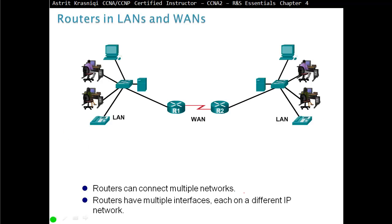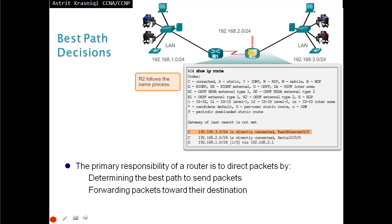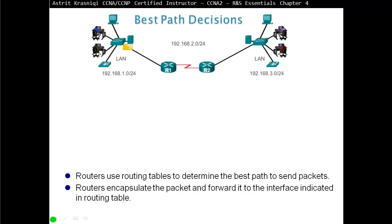Routers in LAN and wide-area networks can connect multiple networks together. Routers have multiple interfaces, each on a different IP network. The primary responsibility of the router is to direct packets by determining the best path and forwarding packets toward their destination. As a packet comes in, the router reads the destination address, looks it up in the routing table, and if a match is found, chooses the exit interface indicated in the routing table.